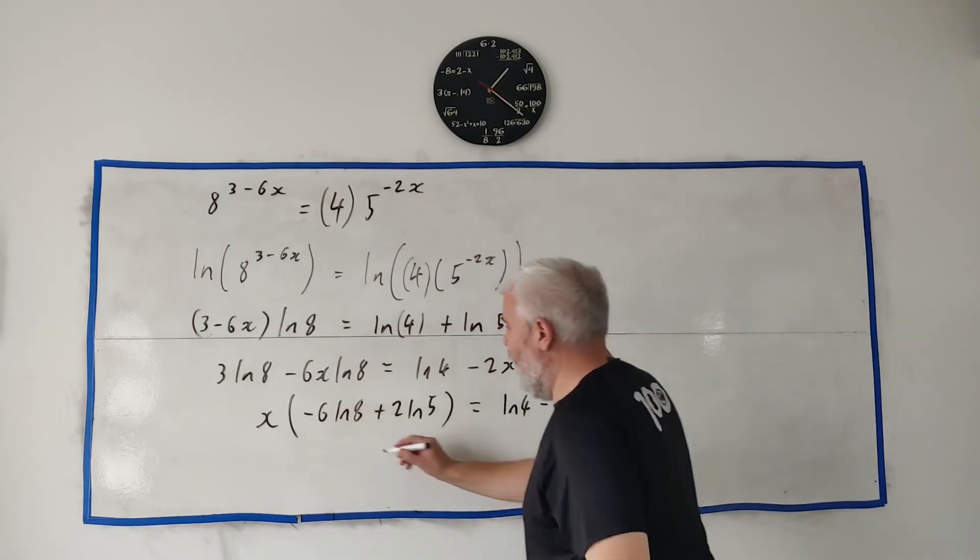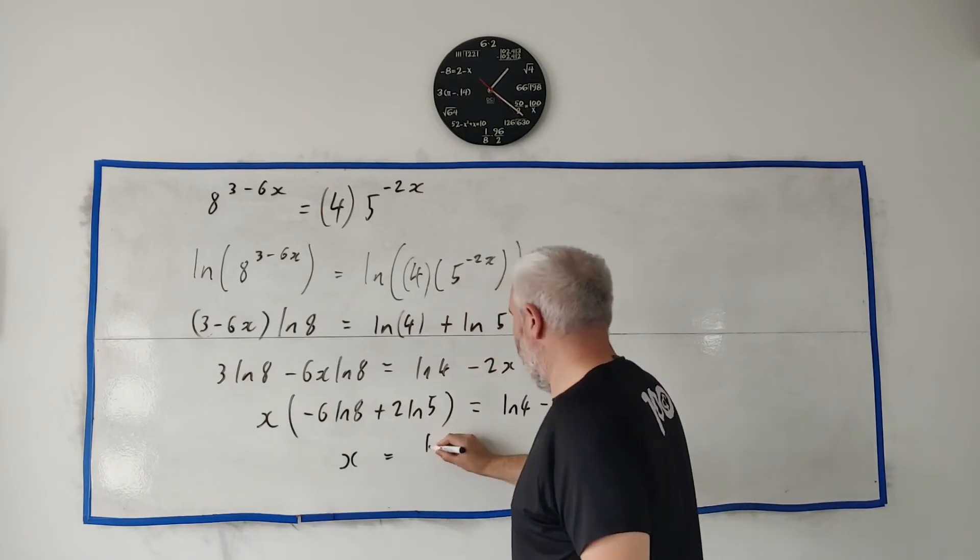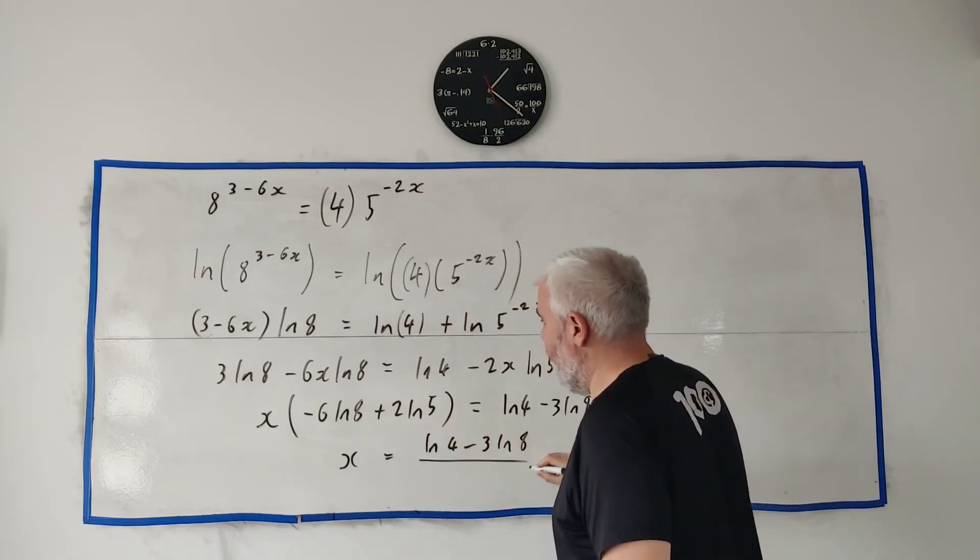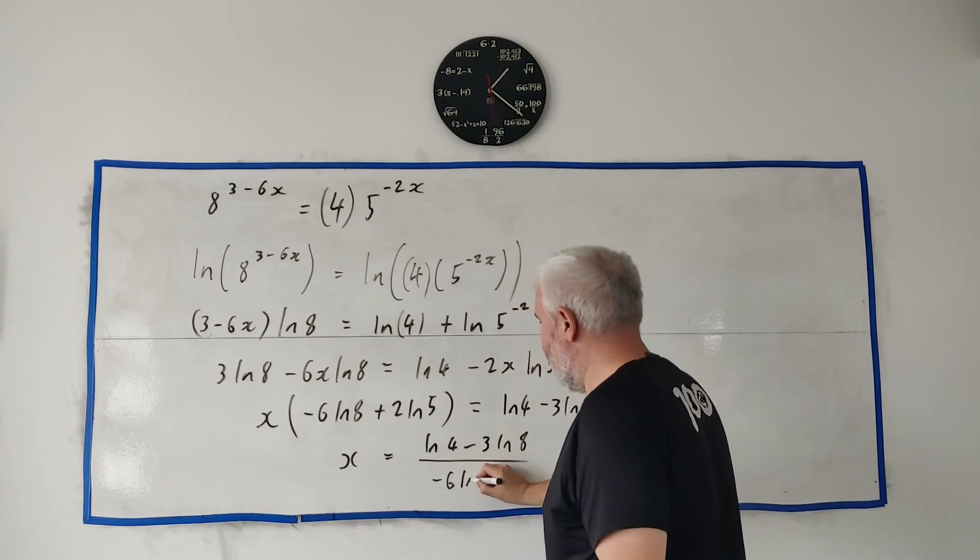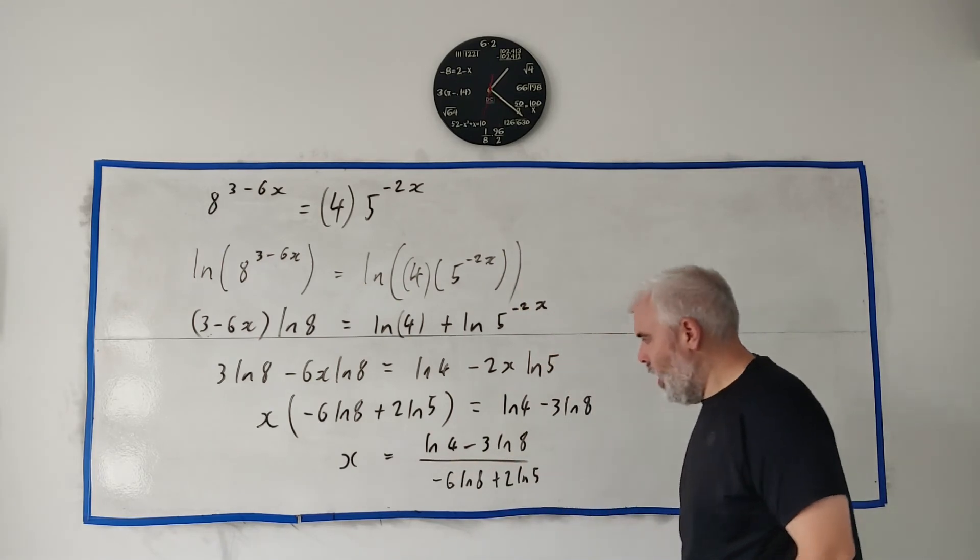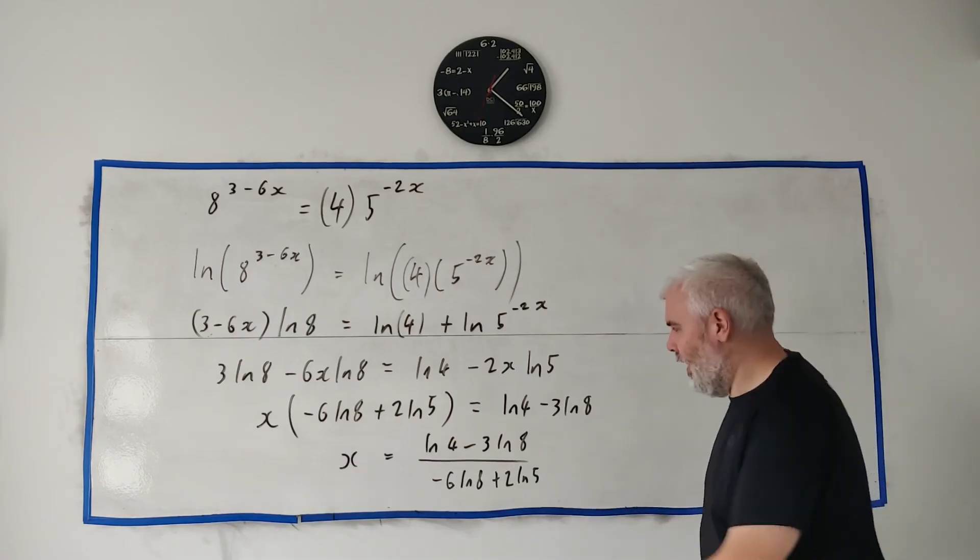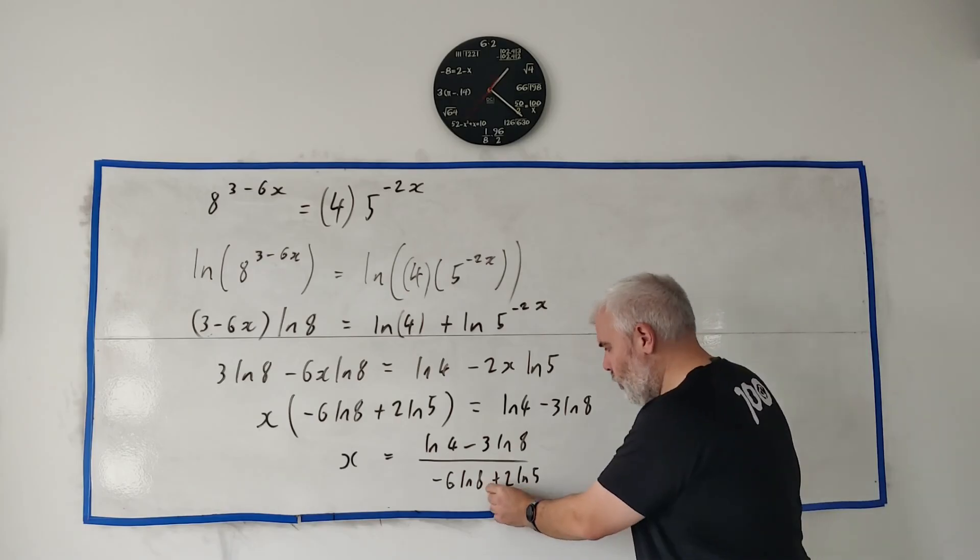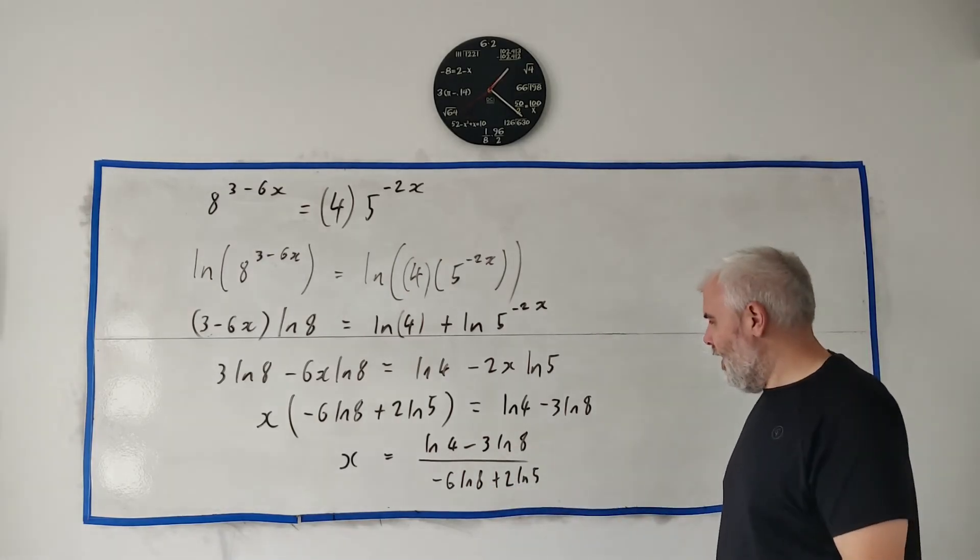Remember this is a complicated looking number but it's just a number. And we just get x is equal to natural log 4 minus 3 natural log 8 divided by minus 6 natural log 8 plus 2 natural log 5. You could start cleaning some of this up. Remember that the logs could recombine because there's a minus, recombine here because there's a plus.